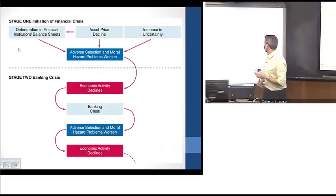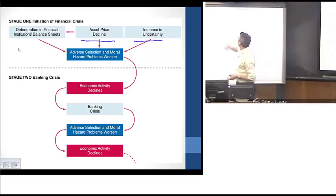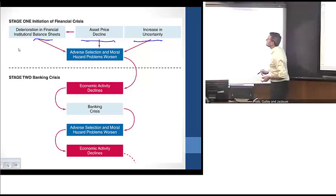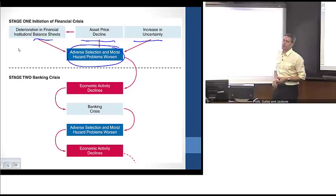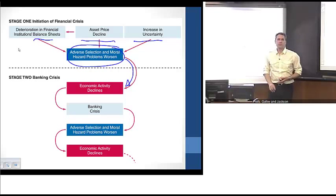The punchline is that all three triggers — uncertainty, asset price declines through the boom-bust cycle, and financial innovation mismanagement — all feed through to heightening the adverse selection and moral hazard problems. As a result, that leads to contraction in lending and a contraction in economic activity, which leads us into the second stage: the banking crisis.